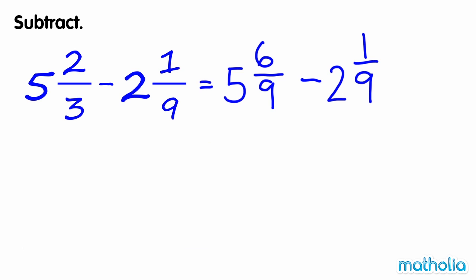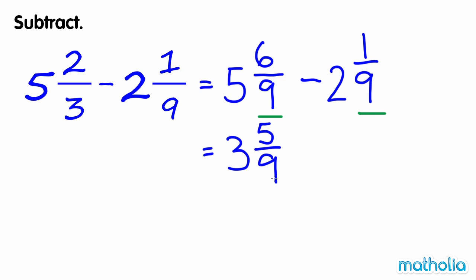First, subtract the whole numbers: 5 minus 2 equals 3. Next, subtract the fractions: 6 ninths minus 1 ninth equals 5 ninths. So 5 and 2 thirds minus 2 and 1 ninth equals 3 and 5 ninths.